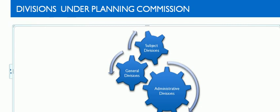Let's start with the administrative division. They render services pertaining to administration, accounts, library, training, and other general services to the employees of the commission.